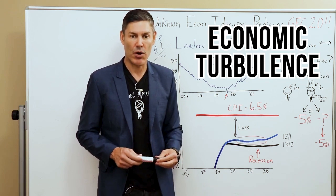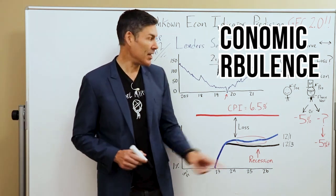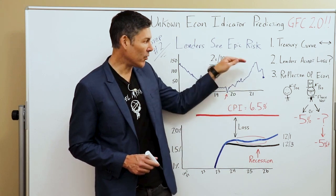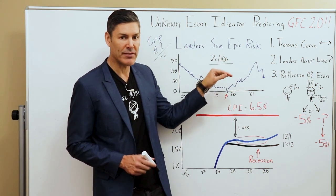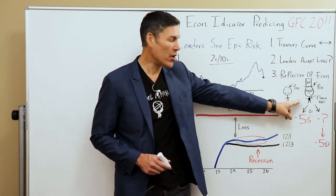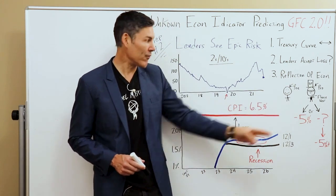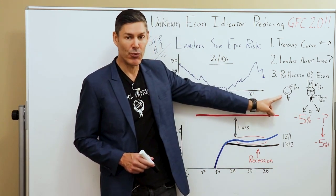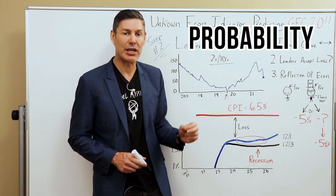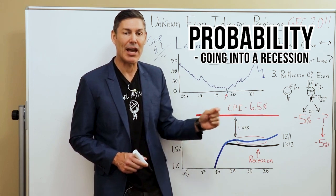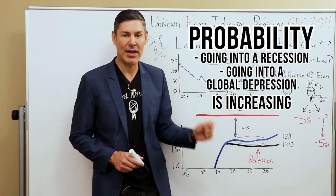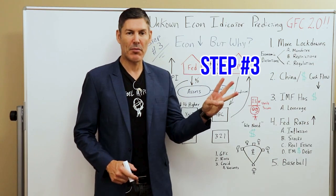They think the risk of lending to a business in the real economy or buying stocks is so much greater because of the economic turbulence coming down the road. And if these curves continue to flatten while the level of consumer prices stays relatively high, the seasoned pros are telling us: average Joe, you need to keep your eyes open because the probability of us going into a recession or even a global depression is increasing by the day.